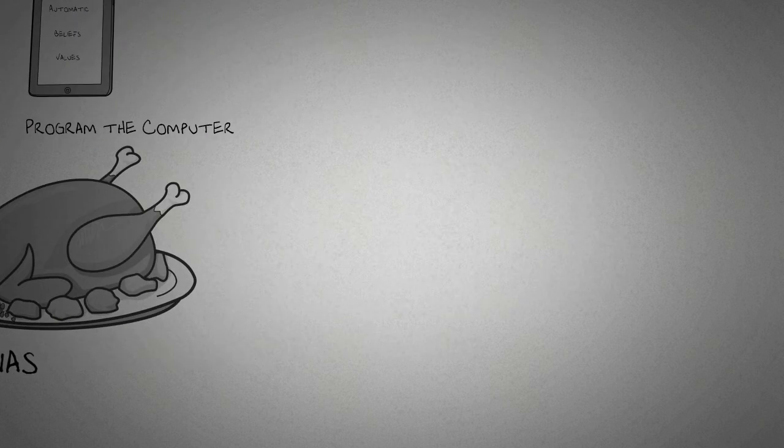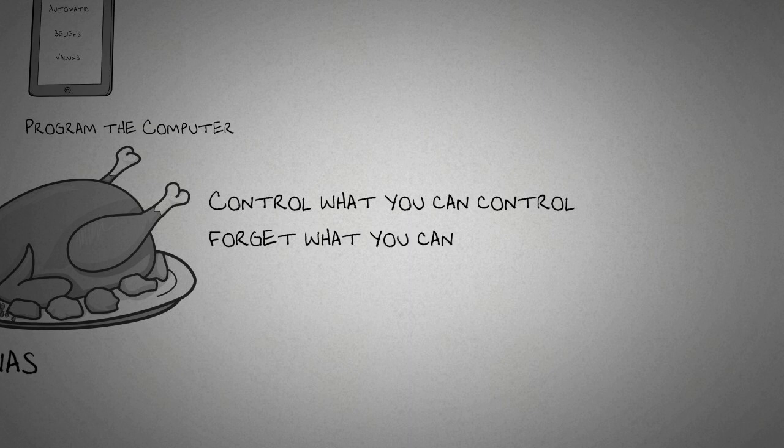Another way to calm your chimp is to control what you can control and to forget about what you can't. Sounds obvious, I know. You can't control others. You can influence circumstances to an extent, but you can't control them fully. You can generally control yourself and your reactions to events. It's not what happens to you, it's how you react to what happens to you.